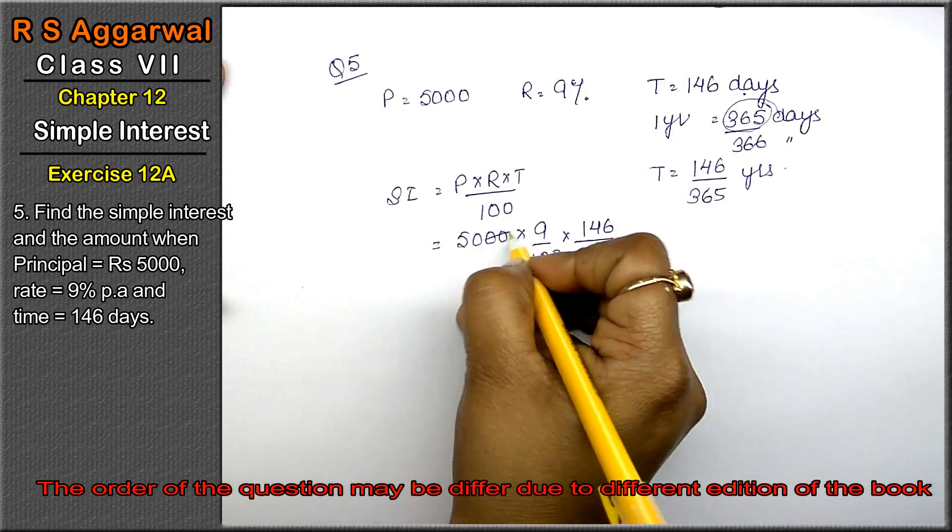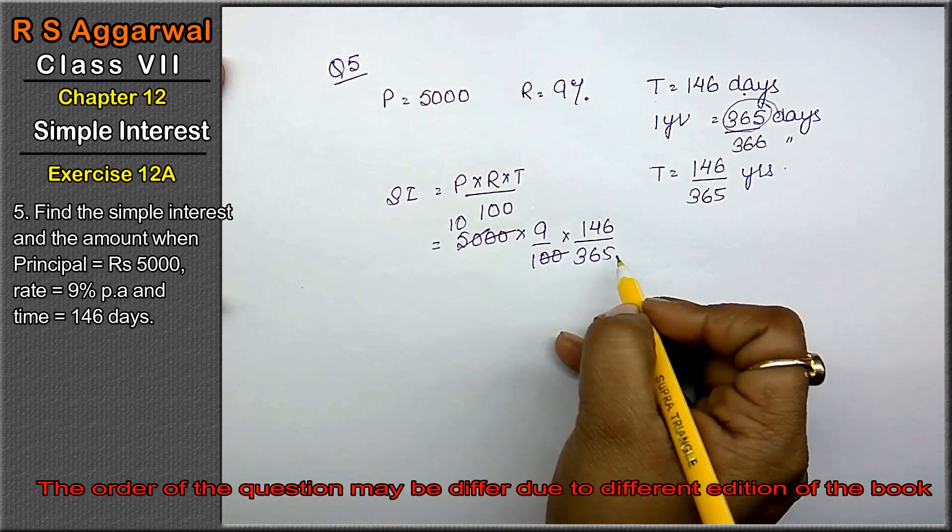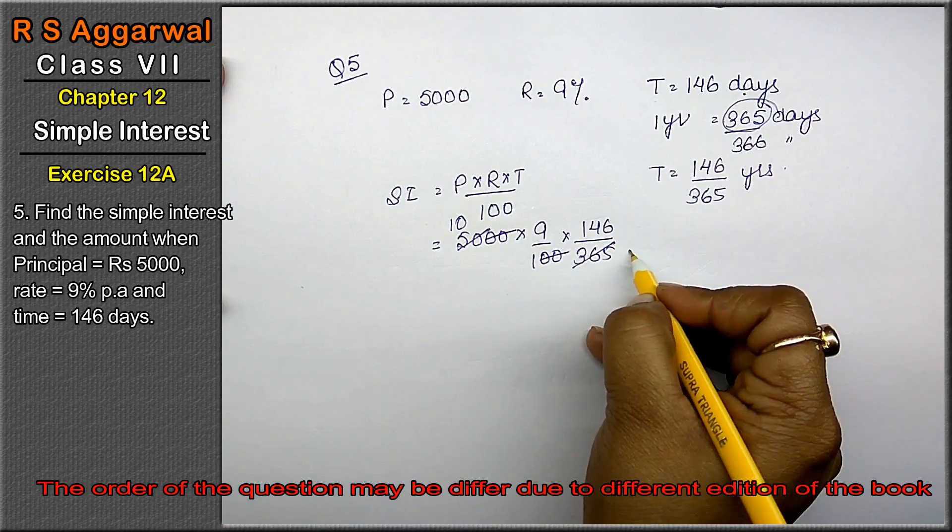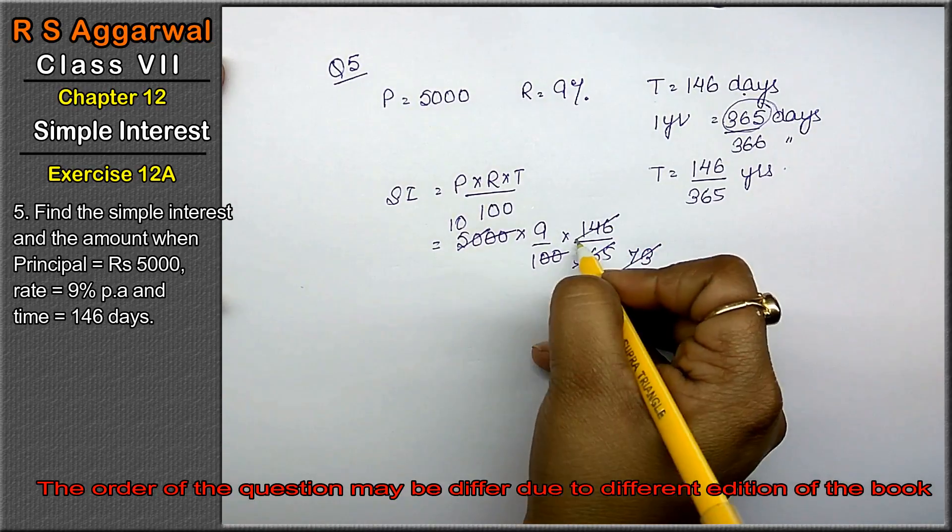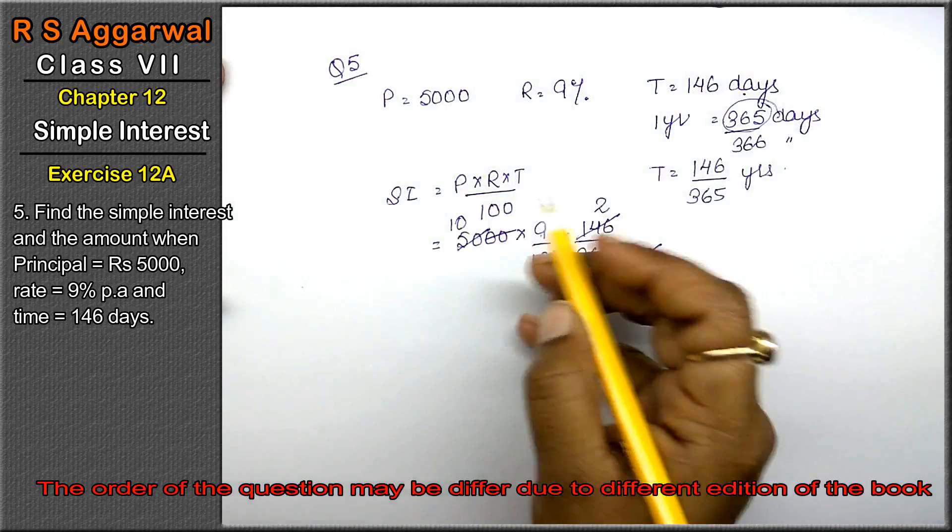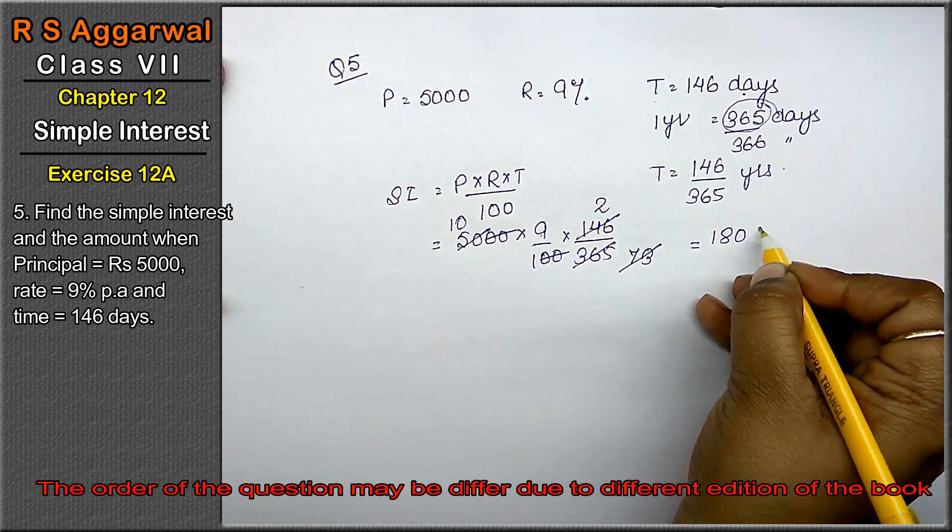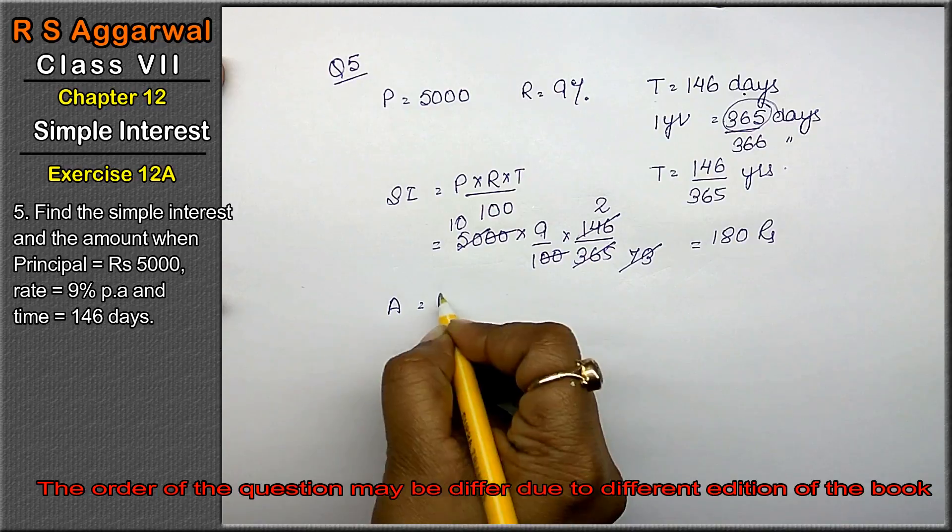Calculating: zeros cancel. 146 into 9 equals... step by step calculation gives 180. Rupees 180 is the simple interest.